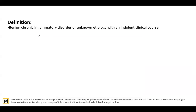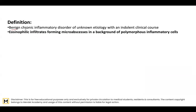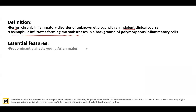By definition, Kimura disease is a benign condition. It is a chronic inflammatory disorder of unknown etiology with an indolent clinical course — meaning a slow clinical course. It is characterized by eosinophilic infiltrates forming micro-abscesses in a background of polymorphous inflammatory cells, and it predominantly affects young Asian males.